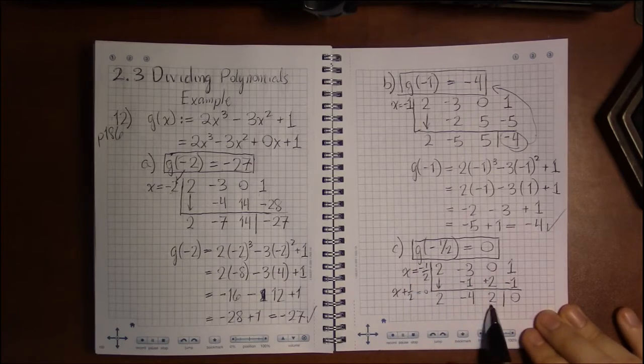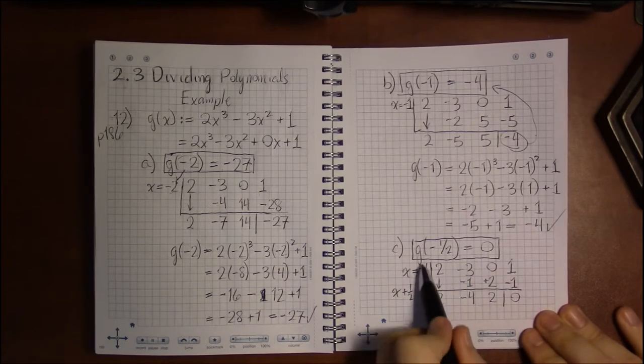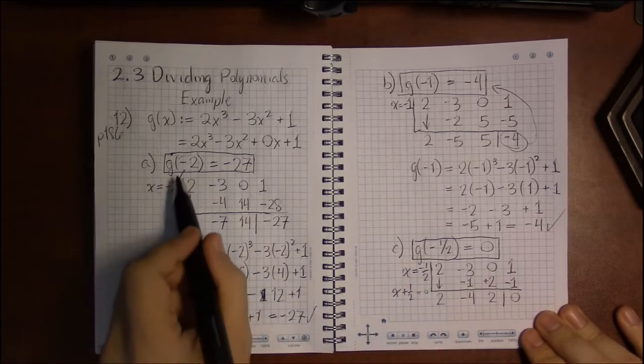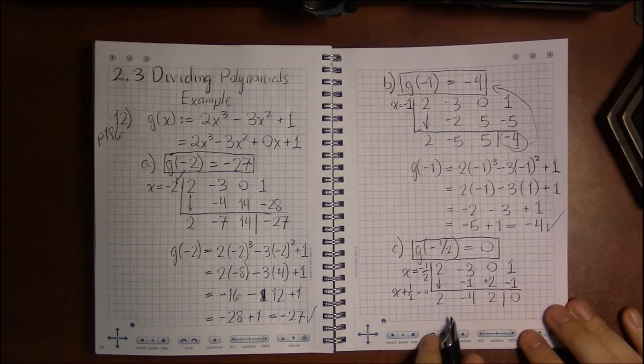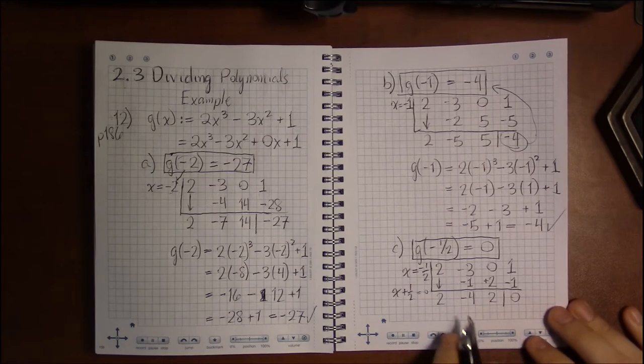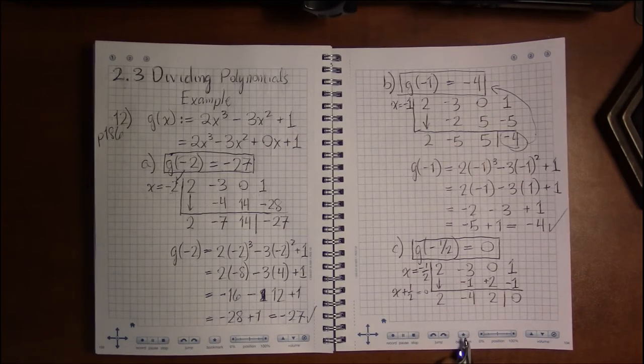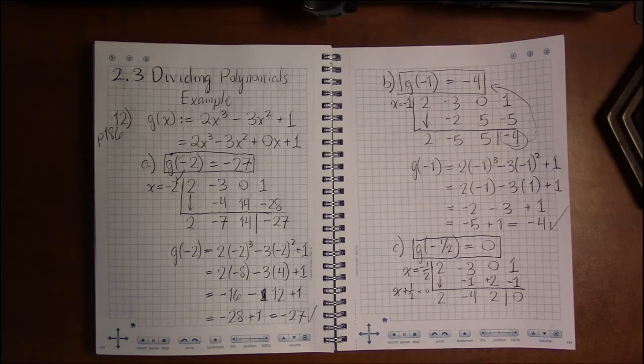And the quotient is what's left over when you divide g by x plus 1 half. And we're going to be using that extensively in the next video when we talk about the factor theorem. Take care.